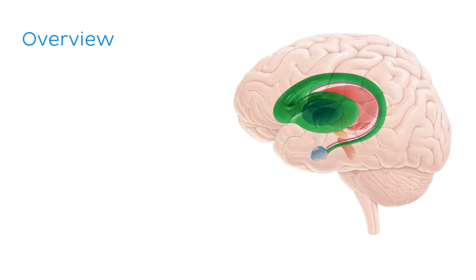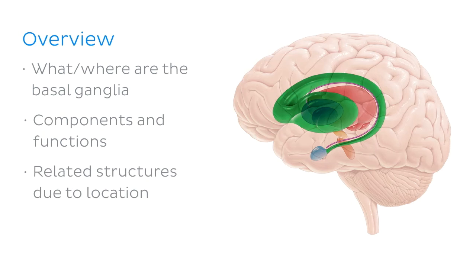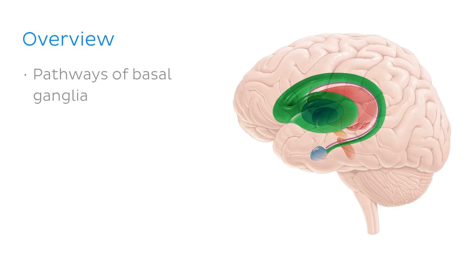So, what exactly will we be learning about in this tutorial? First up, we'll define the basal ganglia and describe their general location. We'll then discuss what structures are actually included in this group and discuss their individual functions. We'll look at some structures considered part of the basal ganglia based on their location and anatomy, and briefly discuss other structures sometimes considered part of the basal ganglia based on their function. We'll then see how the basal ganglia interact with other brain structures through well-defined pathways, and finally finish with a clinical note to put the importance of the basal ganglia into perspective.